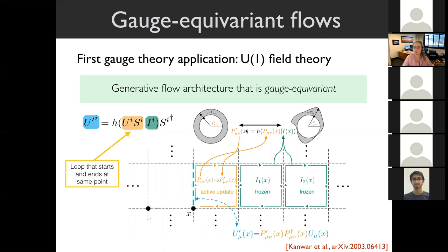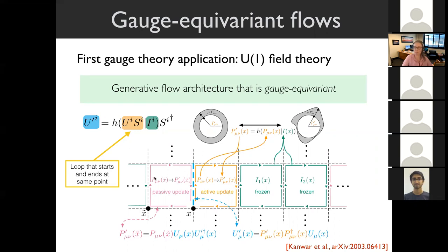The coupling layer is equivariant under a simple condition on the kernel: quantities left- and right-multiplied by the same group element pop out of the kernel. For an abelian group this is true for any kernel; for non-abelian groups you can also construct appropriate kernels. In successive layers you update different sets of links so that after some number of layers you've updated every link in the lattice. This was general—not specific to U(1) field theory—and also works for other groups.